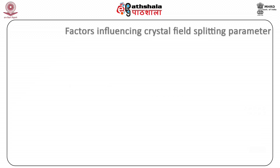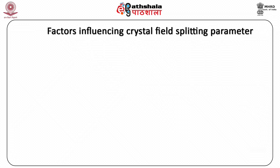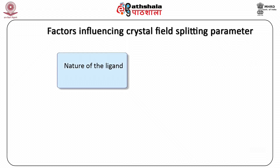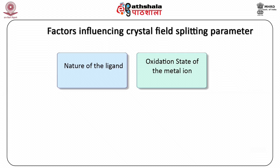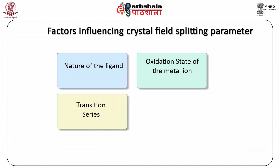The magnitude of crystal field splitting greatly depends upon four factors: first, the nature of the ligand; second, the oxidation state of the metal ion; third, the transition series; and fourth, the geometry of the complex. We will be discussing all these factors one by one.